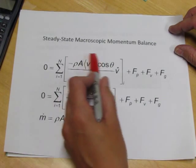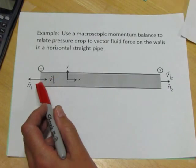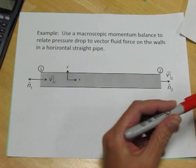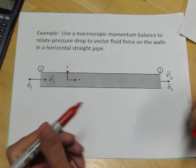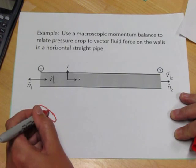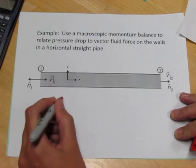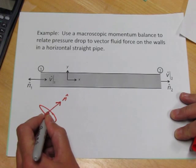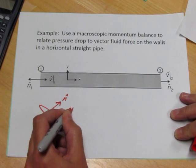So really everything is the same for both the inlet and the outlet except for cosine theta. Theta is the angle for a given surface between the outwardly pointing unit normal and the unit normal in the direction of the velocity.